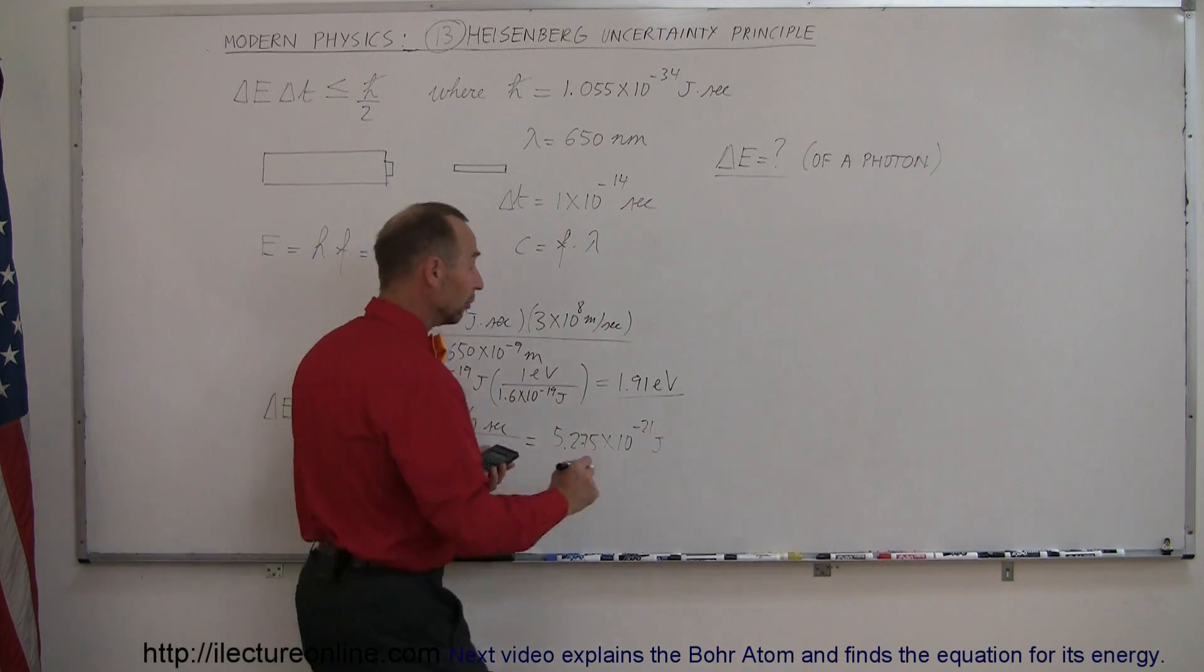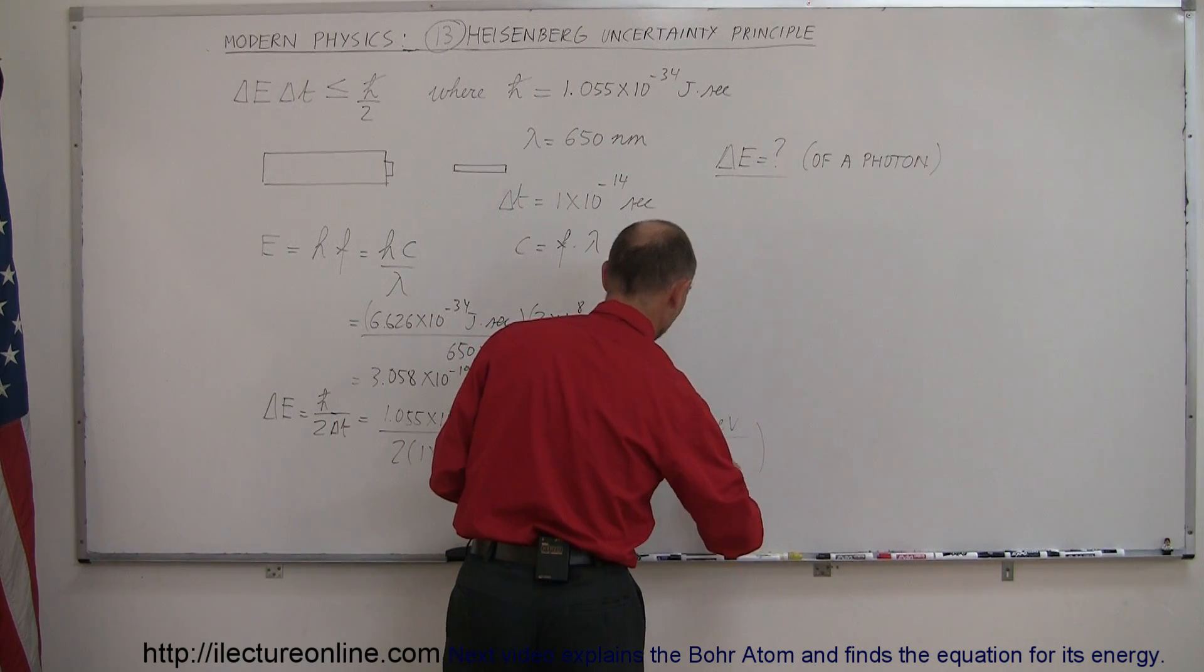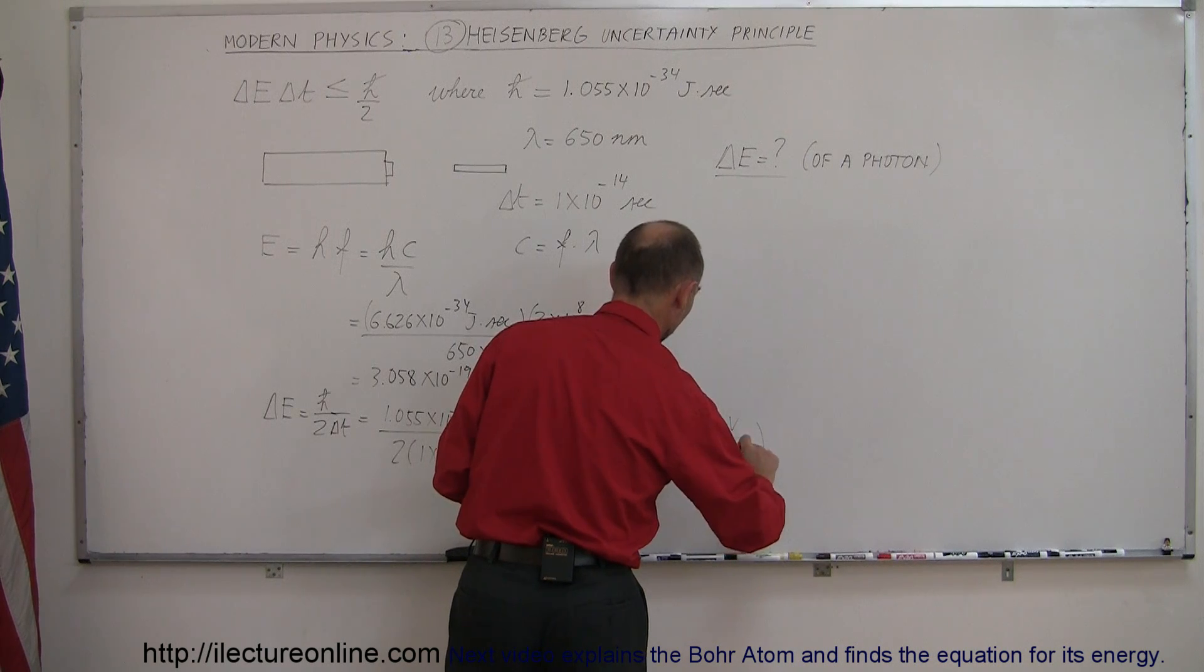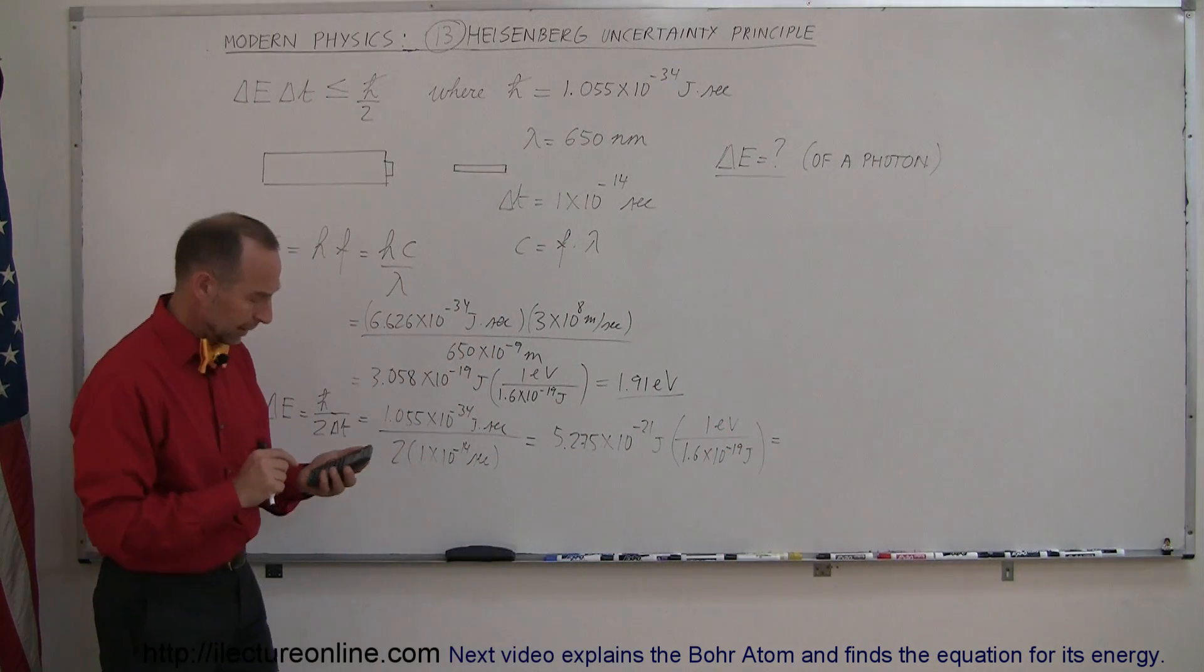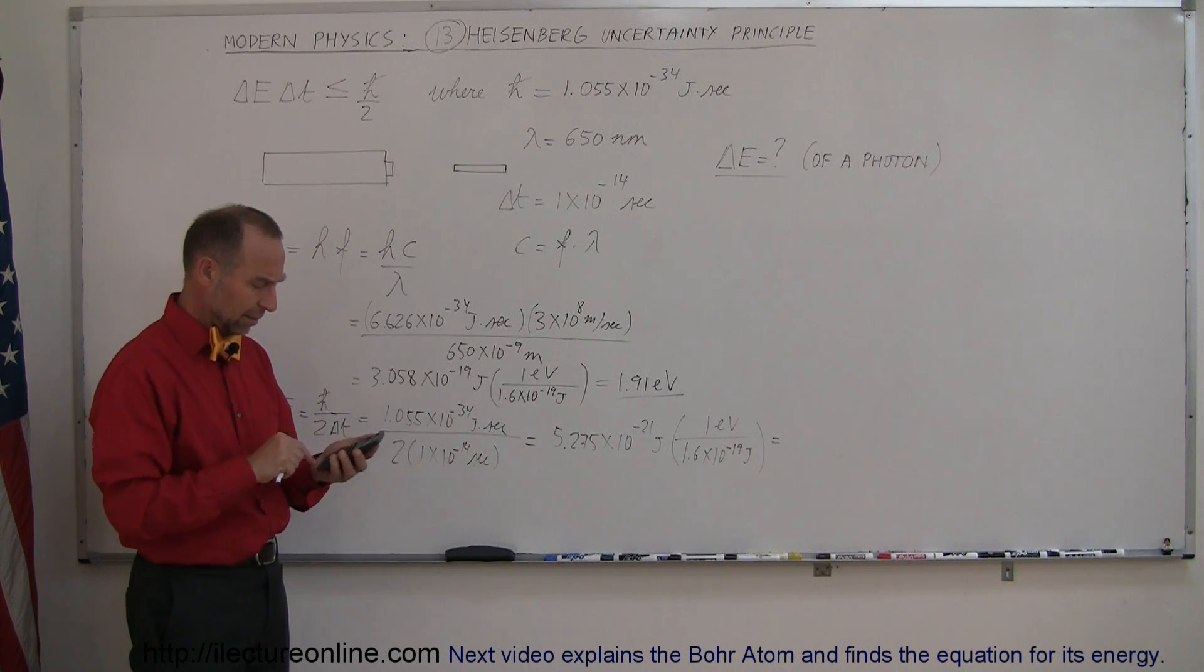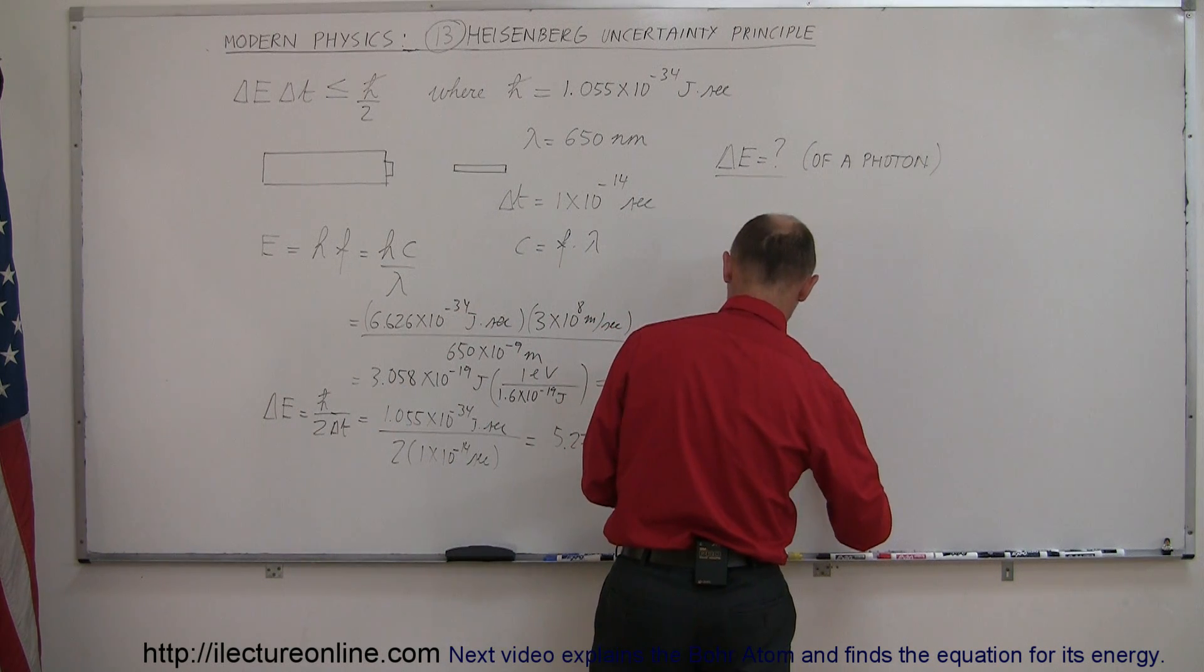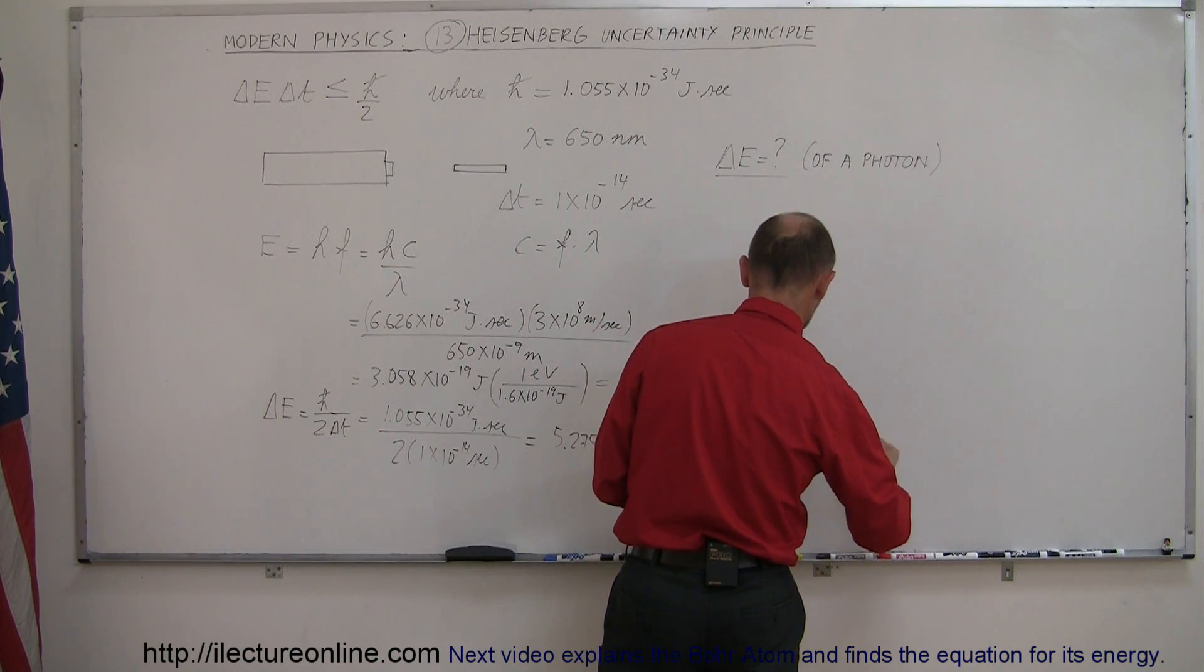Converting that to electron volts, we have 1 electron volt divided by 1.6×10⁻¹⁹ joules. So divided by 1.6×10⁻¹⁹, and we get 0.033 electron volts.